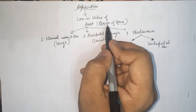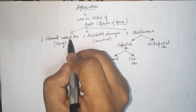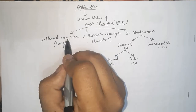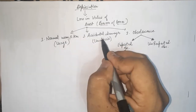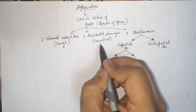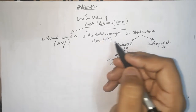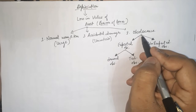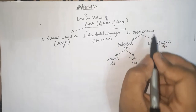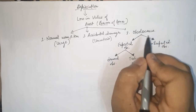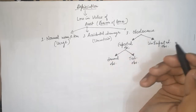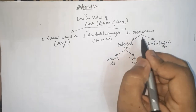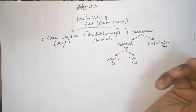The reasons for loss in value are: first, normal wear and tear, which is totally based on the usage of the asset — it will happen, you cannot avoid it. Second is accidental damage, which is due to uncertainties that can happen anytime. Third is obsolescence, which means the process of becoming obsolete — that is, outdated technology, or depreciation occurring due to an outdated thing.